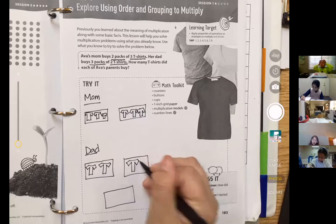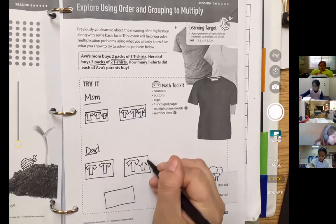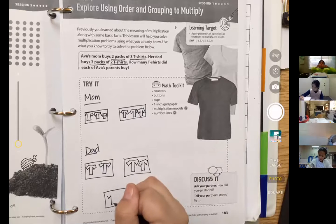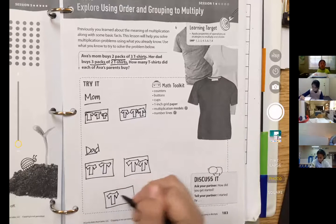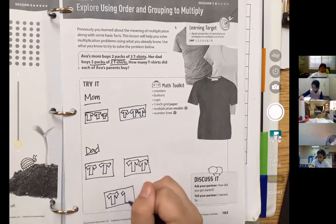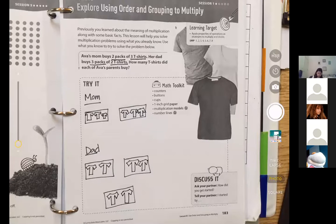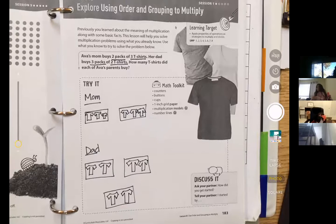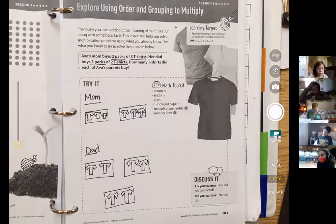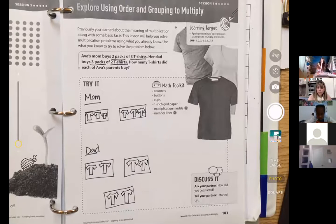Right now you are drawing your models to show what Ava's mom bought and what Ava's dad bought. So take a minute to draw that. If you want to copy mine, you can. If you want to draw your own, you can. And I'm going to give you one more minute to draw your models.